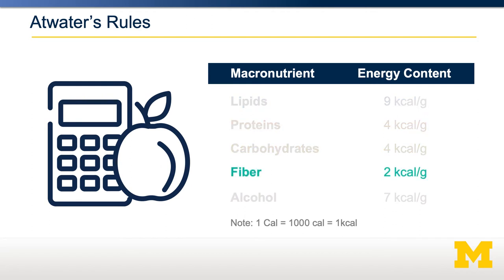Fiber, which is inefficiently digested by our bodies, has an estimated Atwater factor of 2 kilocalories per gram. Whereas alcohol, which you may not even think of as a macronutrient, has 7 kilocalories per gram. This is worth remembering because if you drink an alcoholic beverage, there's energy not only in the carbohydrates or proteins that might be present, but also in the alcohol itself, which can be used by our bodies to generate energy.